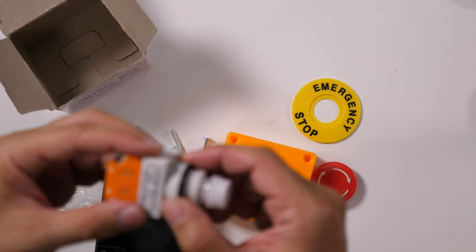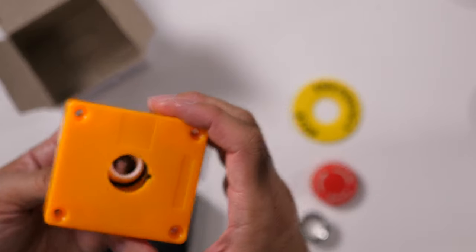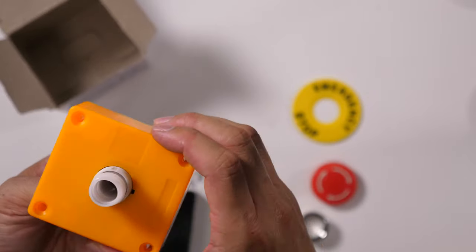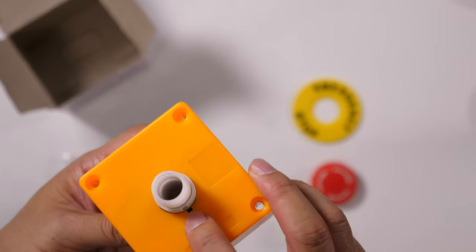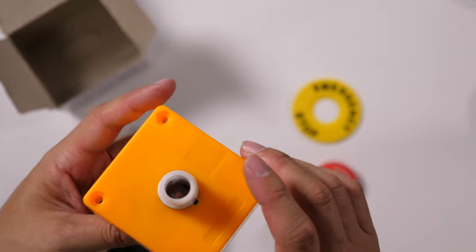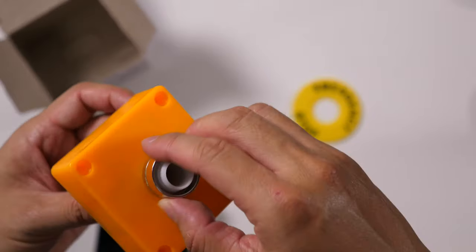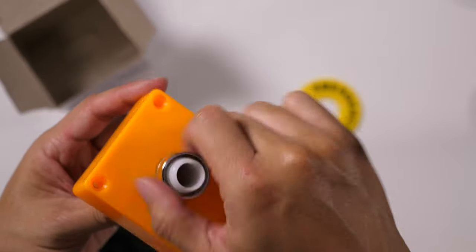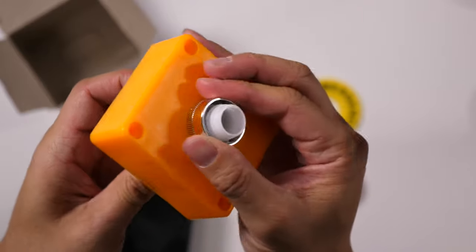Then pass this through this opening. There is a key here in the hole, but there is no key on the button, so you can rotate it 360 degrees. Looks like this silver part you just tighten down there.